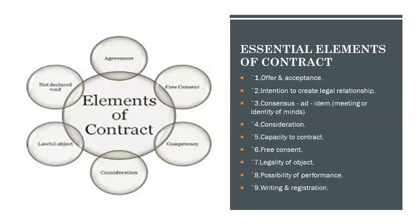The nine elements of the contract act are: first, offer and acceptance; second, intention to create a legal relationship; third, consensus ad idem, that means meeting or identity of minds; fourth, consideration; fifth, capacity to contract; sixth, free consent; seventh, legality of the object; eighth, possibility of performance; and the ninth, writing and registration of the contract.